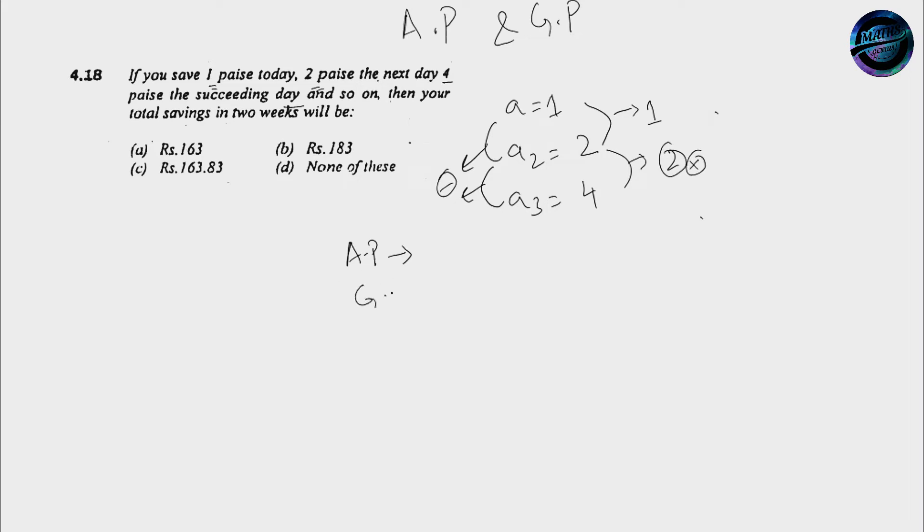Then we will do the test for GP. GP means when we divide the next term with the previous term we should be getting the same constant result. Similarly if the second term divided by the first is 2 over 1, we are getting 2. Similarly if the third term that is 4 is being divided by the second term that is 2, I will be getting a constant of 2. It means if both of these values are same, it means that it's a geometric progression.